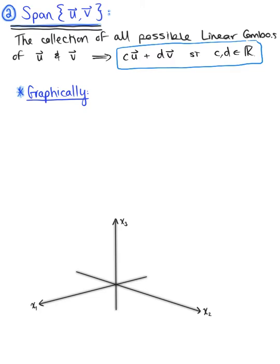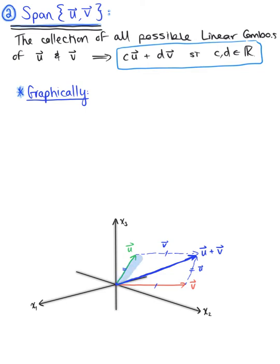So what is this going to look like graphically? From the origin, here is vector u and somewhere over here is vector v. We know one linear combination right away from the parallelogram rule. From the terminal point of vector u, we draw a parallel vector v, and from the terminal point of vector v we draw a parallel vector u. The parallelogram rule tells us that vector u plus vector v is the vector along the main diagonal of that parallelogram — a linear combination where both scalars are one.